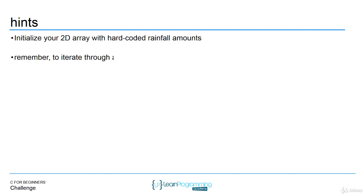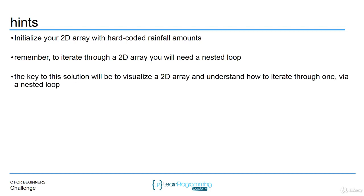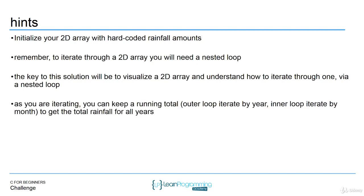Just a reminder: to iterate through a 2D array you're going to have to have a nested loop — basically one inner loop. The key to this solution will be to visualize a 2D array and understand how to iterate through one via a nested loop. As you are iterating, you can keep a running total in that first set of loops. An outer loop will iterate by year, the inner loop will iterate by month, and you can keep a running total to get the total rainfall for all years. Your first goal should be to get that total rainfall for all years.